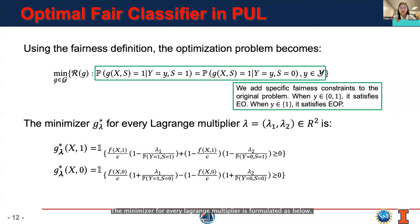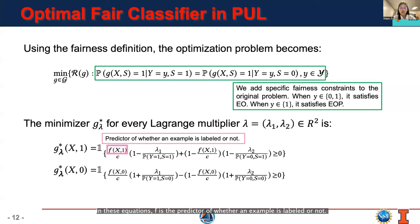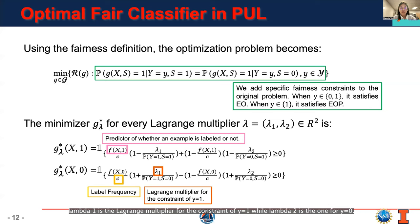The minimizer for every Lagrange multiplier is formulated as below. In these equations, F is the predictor of whether an example is labeled or not. C is the labeled frequency. Lambda 1 is the Lagrange multiplier for the constraint of Y equals 1, while Lambda 2 is for Y equals 0.